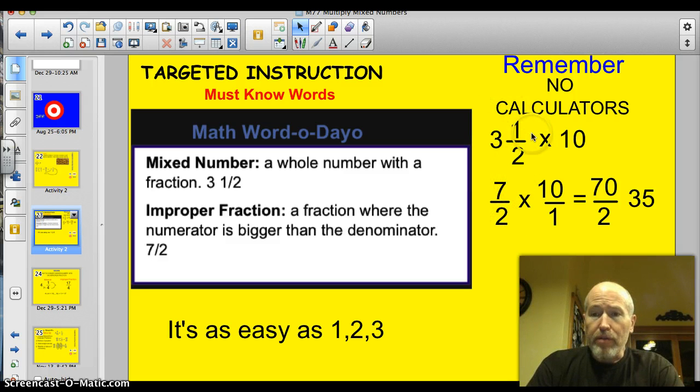So here we go. We have three and a half times ten. Well, we've got to take and switch this to an improper fraction. So three times two is six, plus one is seven. So that's how I got to seven halves. Times, of course, ten over one. We end up with seven times ten is seventy. Two times one is two. Seventy divided by two is thirty-five. It's as easy as one, two, three. But first, my friends, we need a little review.